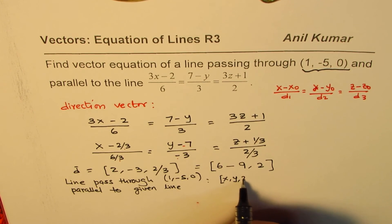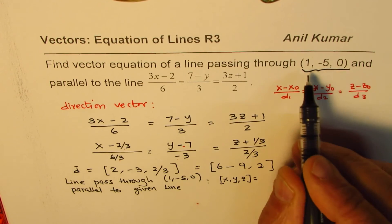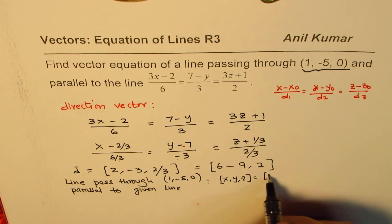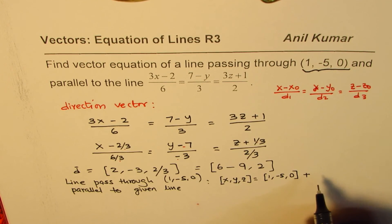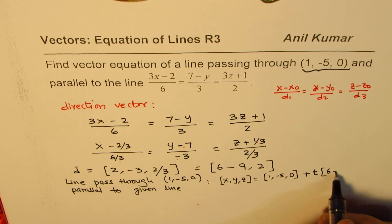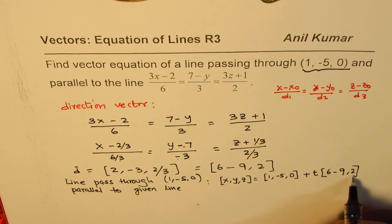the position vector, which is (1, -5, 0), plus the parameter, let's say t, times the direction vector, which is (6, -9, 2), where t belongs to set of real numbers. So that is how you can solve such questions.